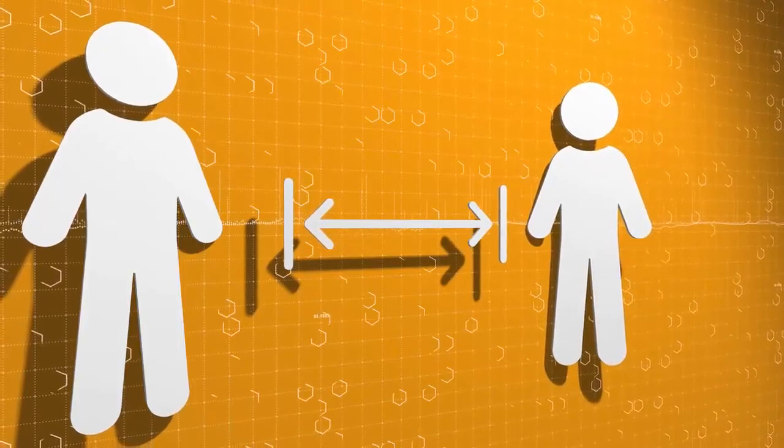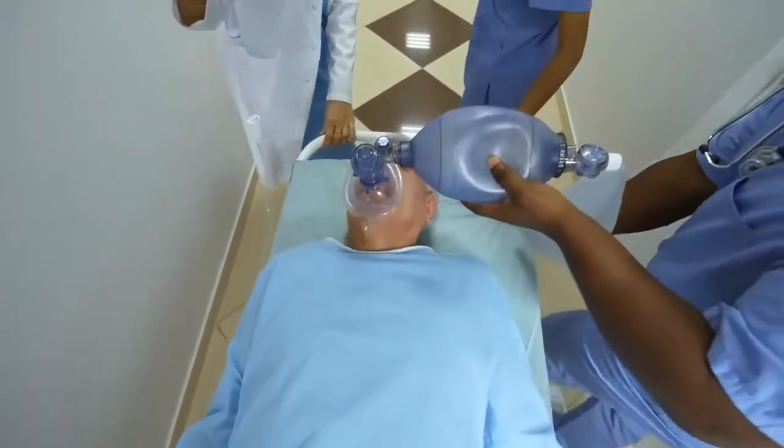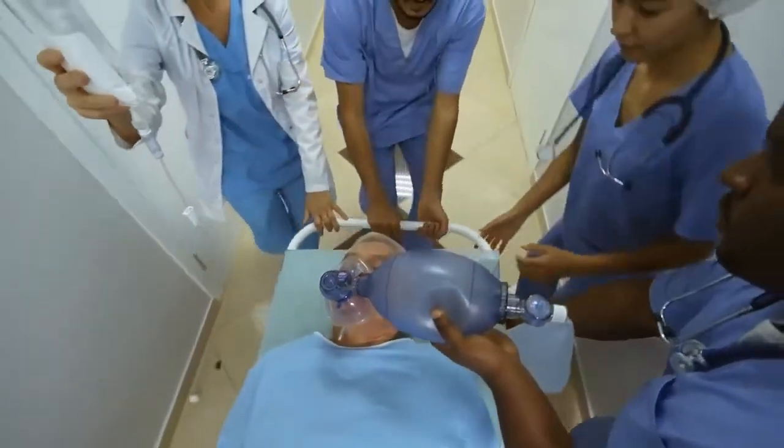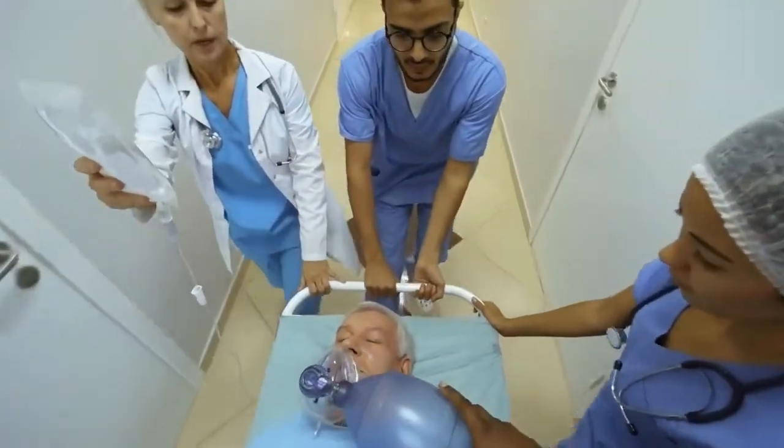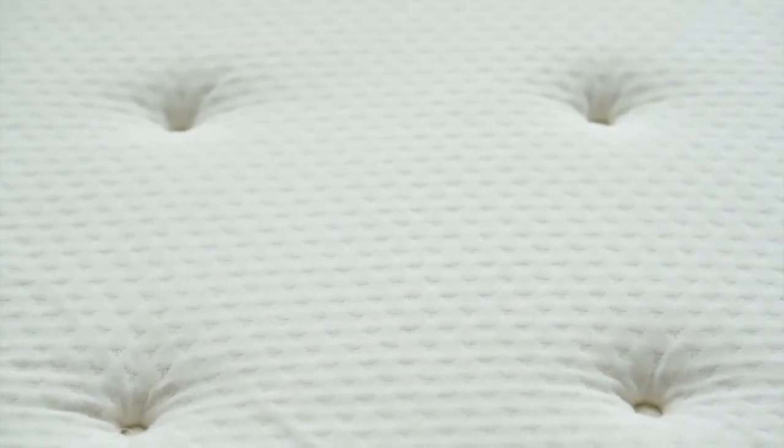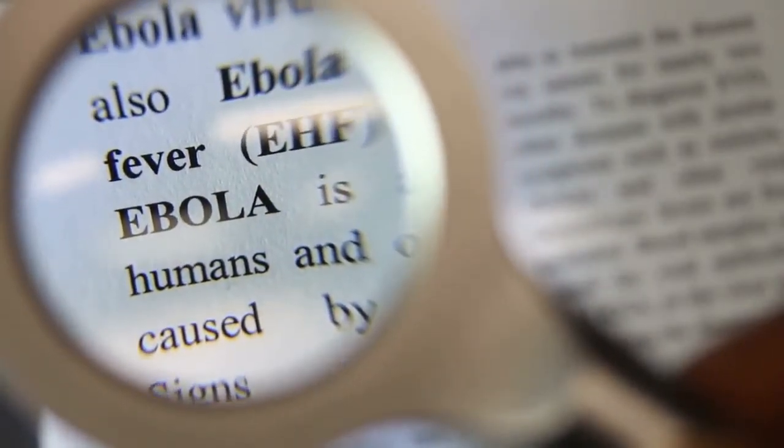Avoid contact with infected people. In particular, caregivers should avoid contact with the body fluids and tissues of an infected person, including blood, semen, vaginal fluids, and saliva. Also, avoid clothing, bedding, or other items that may touch. People with the Ebola virus or Marburg virus become more infected in the later stages of the disease.